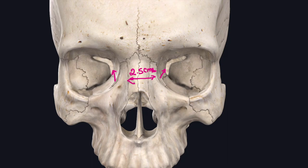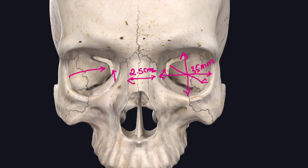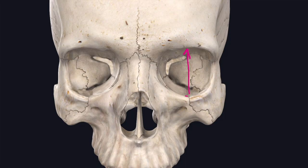The lateral walls slope backwards and medially, meeting each other at a right angle. The orbital margin at the base measures about 35 millimeters in height and the breadth is 40 millimeters. The orbital index is calculated by the maximal orbital height divided by the maximal orbital breadth multiplied by 100.